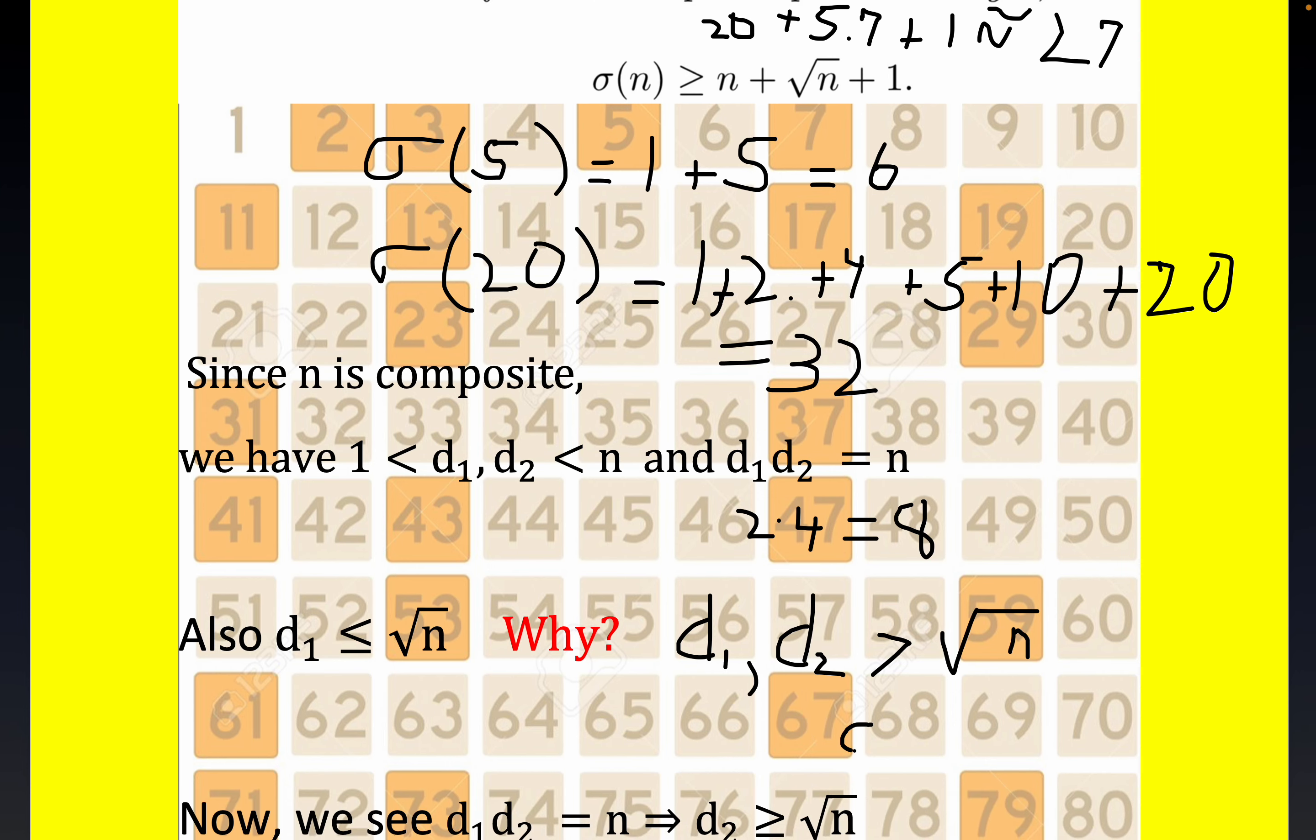Then the product would absurdly be d1 times d2 would be strictly greater than n, right? Which is impossible. But one of the divisors of a composite number has to be less than or equal to the square root of n. It would be equal on squares. Why? Because if you take both of them to be strictly greater than n, then their product, d1 times d2, would be greater than n. Well, no can do, because we know that's what we mean by composite number. Their product is equal to the number.